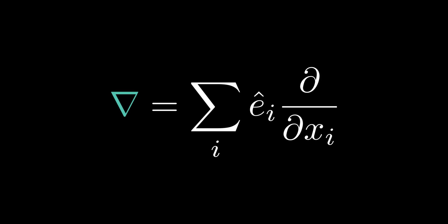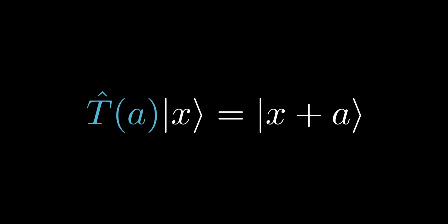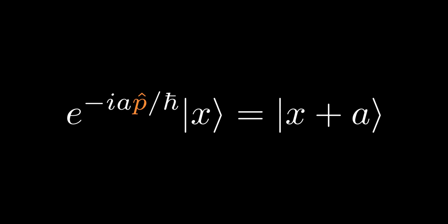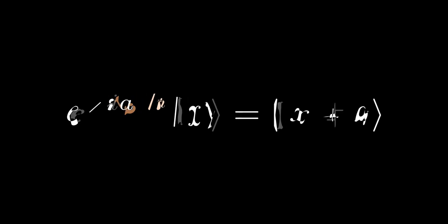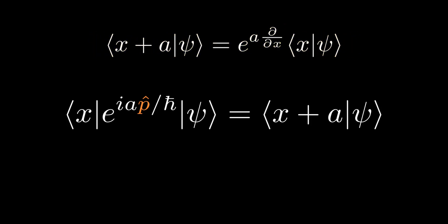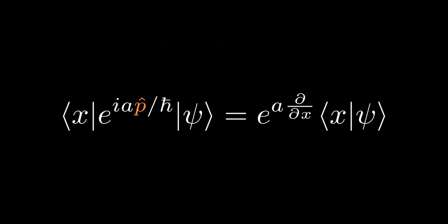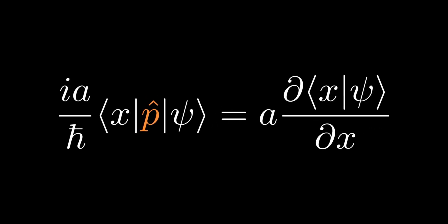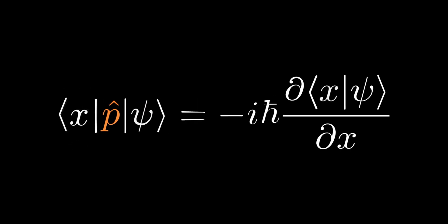To proceed, we consider the effect of the translation operator on a definite state of position. Taking the Hermitian adjoint of both sides and right-multiplying by ket-psi yields an equation on the screen. We equate this to the result obtained previously, giving bra-x e to the i a p over h-bar ket-psi equals e to the a partial-by-partial-x bra-x ket-psi. Equating terms first order in a, then cancelling a and multiplying by minus i h-bar yields the final result: the momentum operator in position representation is minus i h-bar times the partial derivative with respect to x. This generalizes to three dimensions as minus i h-bar del.